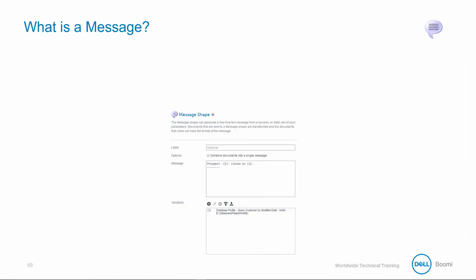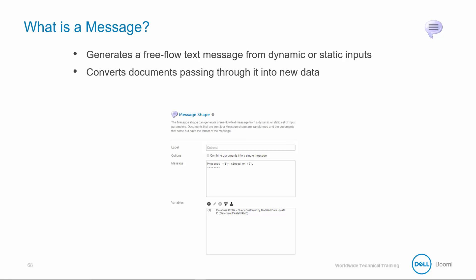Similar to a data map, which converts a document from one format to another, the message shape overwrites the document data and builds it into a message to be sent in the body of an email. We'll want to extract dynamic content from each document to build a custom report message. By default, the message shape generates a free flow text message from dynamic or static inputs, converts documents passing through it into new data, and it's often paired with a mail connector for advanced notifications and to create placeholders for runtime parameters.